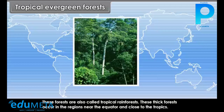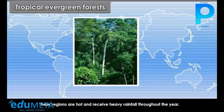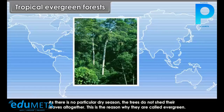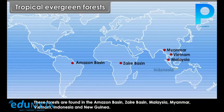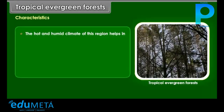Tropical Evergreen Forests are also called tropical rainforests. These thick forests occur in regions near the equator and close to the tropics. These regions are hot and receive heavy rainfall throughout the year. As there is no particular dry season, the trees do not shed their leaves altogether — this is why they are called evergreen. These forests are found in the Amazon basin, Zaire basin, Malaysia, Myanmar, Vietnam, Indonesia and New Guinea.